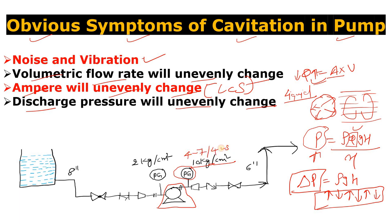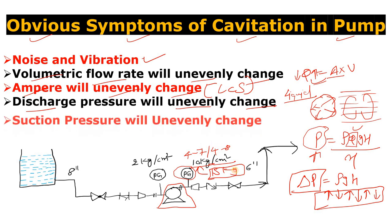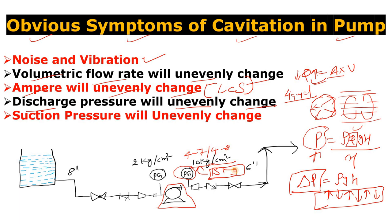During cavitation, if the normal pressure is 10 kg per centimeter square, it may fluctuate to around 4 to 7 or 4 to 8. Please let me know in the comments what you think if the discharge pressure shows 12 to 15 kg — would that also be cavitation or some other reason? The last symptom is that the suction pressure will also unevenly change. As vapor bubbles form, the pressure at the eye of the pump will increase and decrease, impacting the suction side pressure as well.